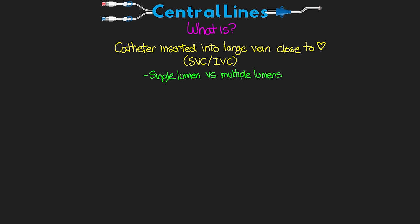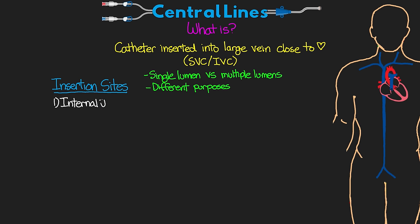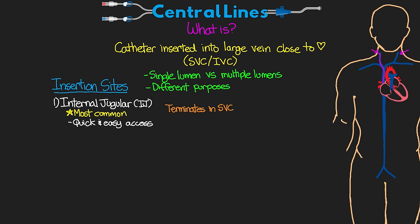There are three primary sites for insertion. The first is the internal jugular, or IJ, and this is probably the most common site as it's quick and easy to get access to with the fewest risks associated with it. The catheter is inserted into either the right or the left internal jugular vein in the neck, and then the catheter tip terminates in the SVC near the right atrium. If we are inserting on the patient's left, we generally use a slightly longer catheter as we have to make our way down and over to the SVC.